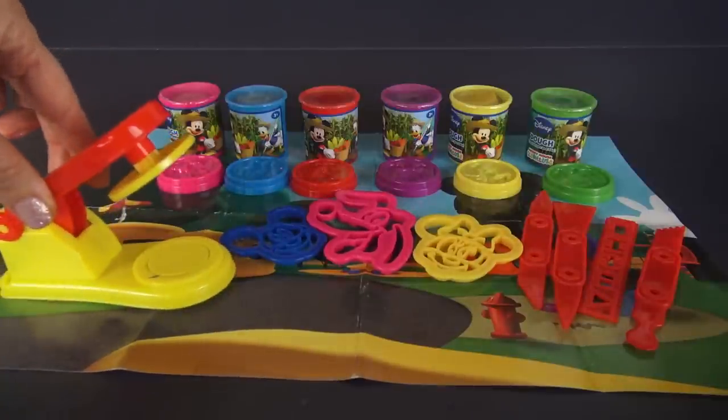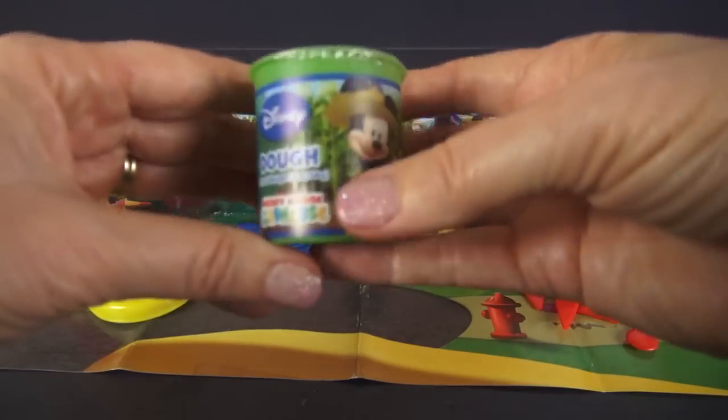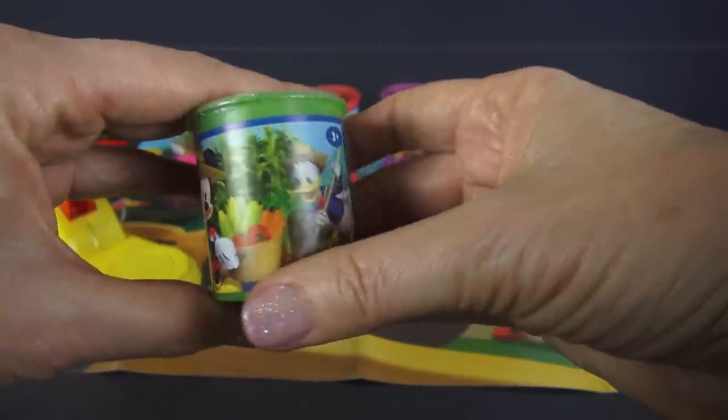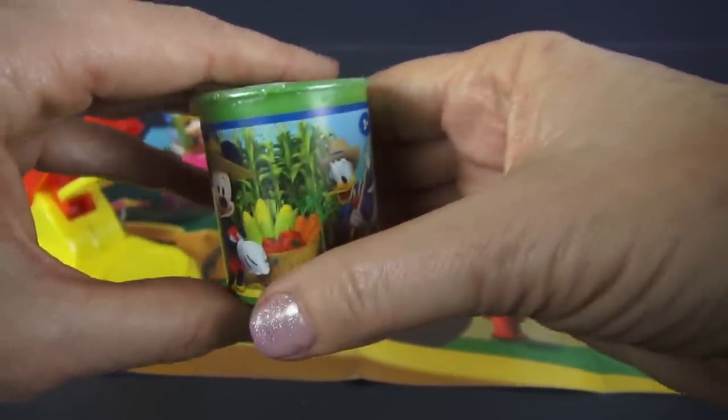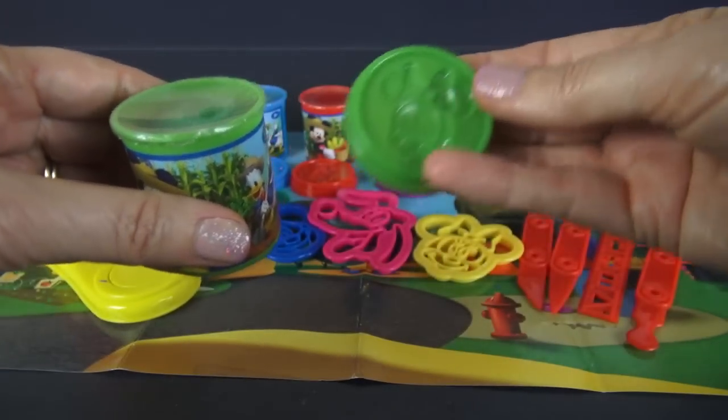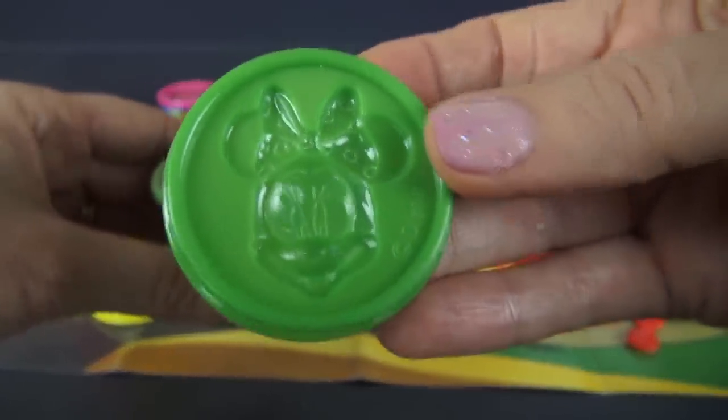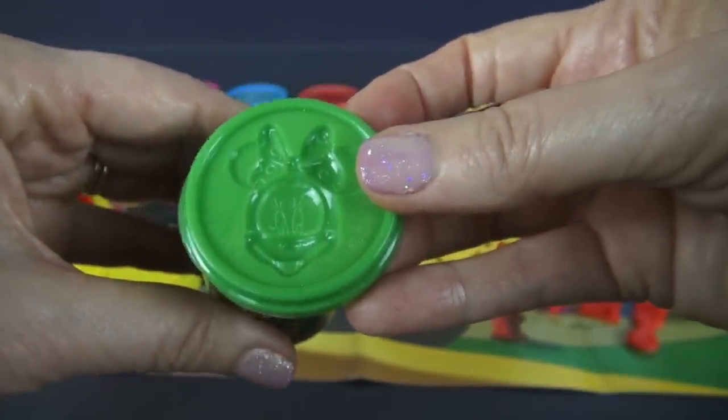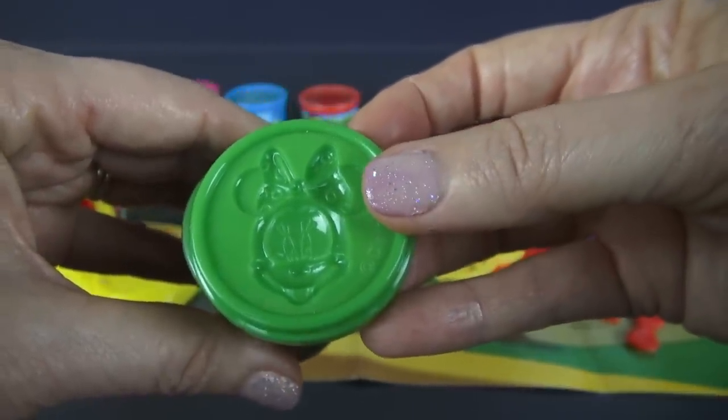This is going to be our press and look at these canisters of Disney dough. Notice that they have pictures of Donald Duck, Mickey Mouse on the labels but they also have the character that we're going to be using as a mold as the lid. That's pretty clever, I think. So, for instance, we have Minnie with the bow and she's got the green.